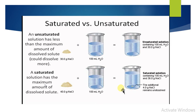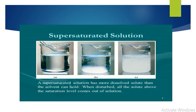When solubility decreases to zero and no more solute dissolves, the solution becomes saturated. A supersaturated solution has more dissolved solute than the solvent can normally hold. When disturbed, all the solute above the saturation level comes out of the solution. To make a supersaturated solution, the solution is heated. After heating, it converts into a supersaturated solution, and then crystallization starts — a process we will learn about in this chapter.